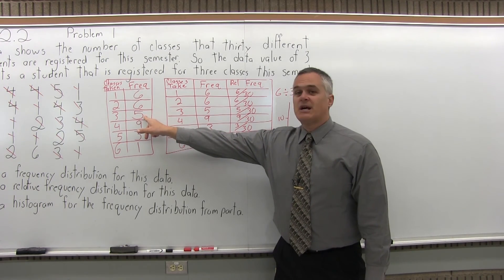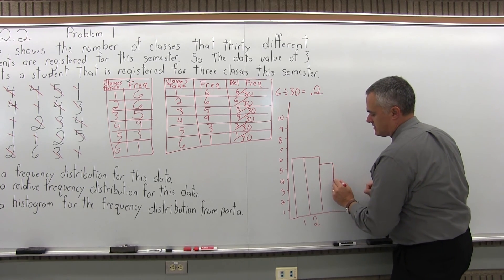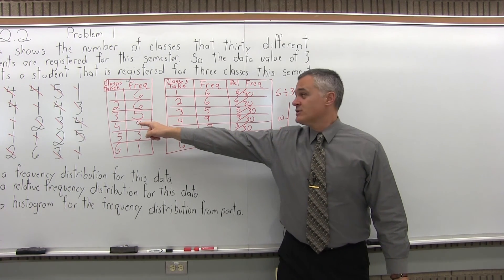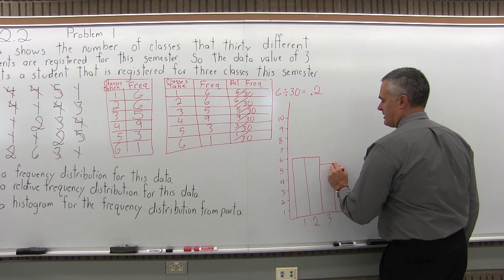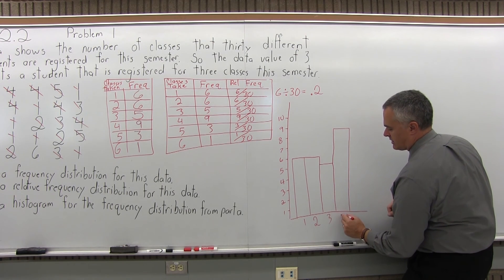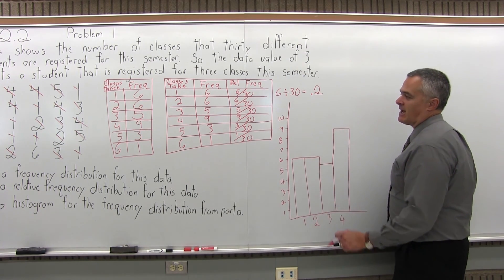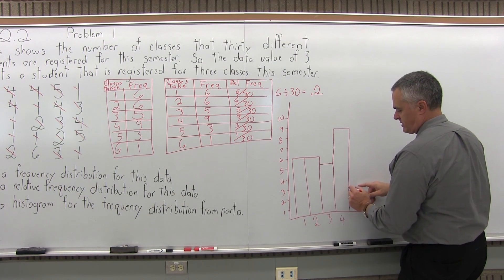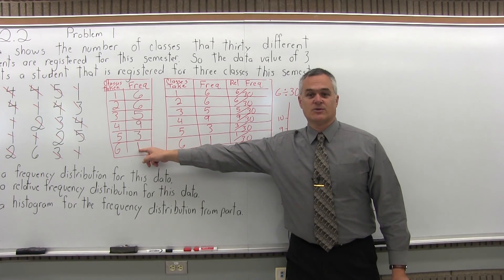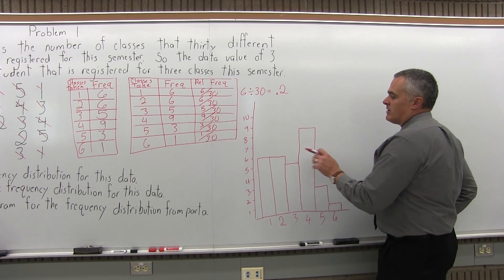The next bar for students taking three classes has a frequency of 5, so a height of 5 — a little bit lower, touching the other bars, labeled with a 3. The next bar goes up to the highest point, which is 9, for students who register for four classes, and gets labeled 4. Then students who register for five classes has a frequency of 3, so height of 3, vertical, touching, labeled 5. And one final bar for students taking six classes — height of only 1, labeled 6.